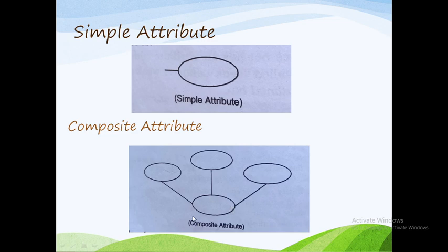For example, consider the attribute address. Address can be divided into subparts: house number, street, area, city, and pin code. Address has a number of parts, so address is a composite attribute. Similarly, name can also be a composite attribute.